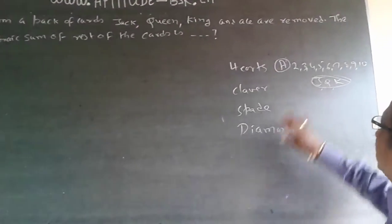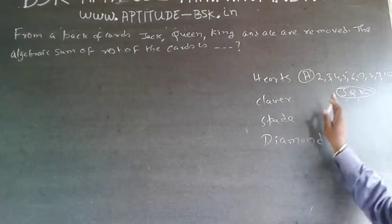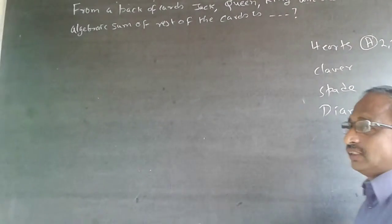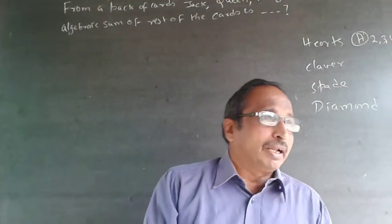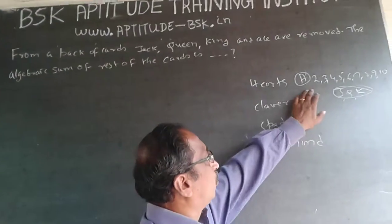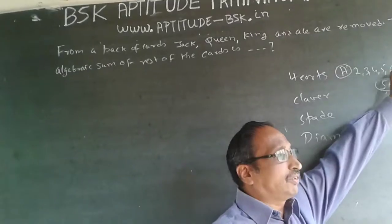Some students are giving me the answer as 9 cards, 9 into 4 will be 36 - that is 36 cards is the remaining number of cards. But algebraic sum means it will be 2 plus 3 plus 4 plus 5, like this till 10, and then into 4 will be the answer.